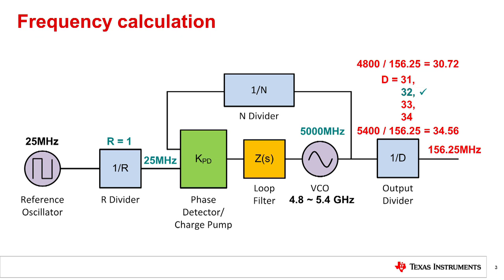The value for the N divider is 5 GHz divided by 25 MHz, which gives us 200. We've worked out the values of the R divider, N divider, and the output divider. The PLL is now locked, and the output frequency is the desired 156.25 MHz.